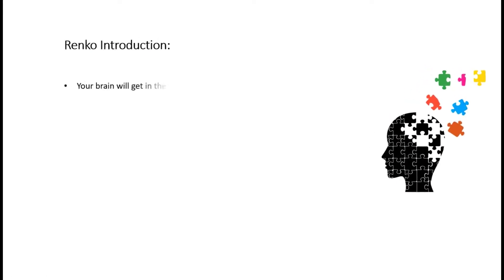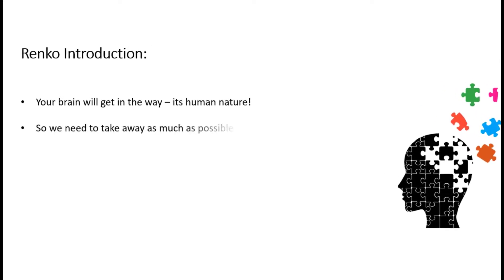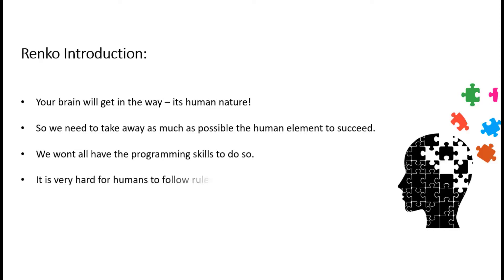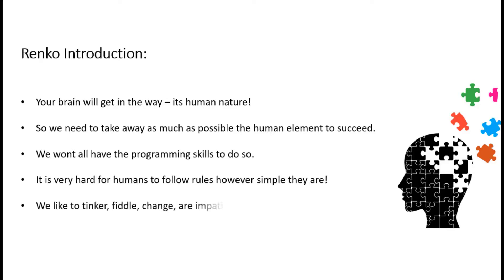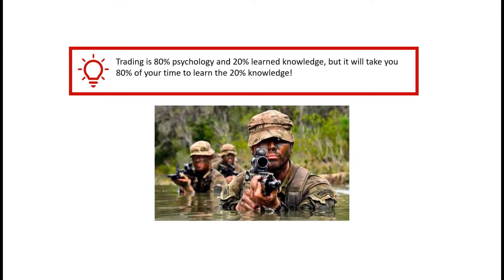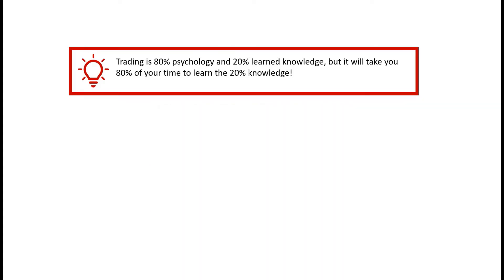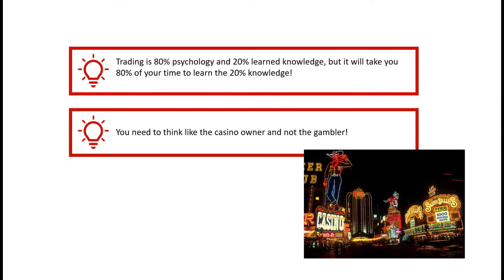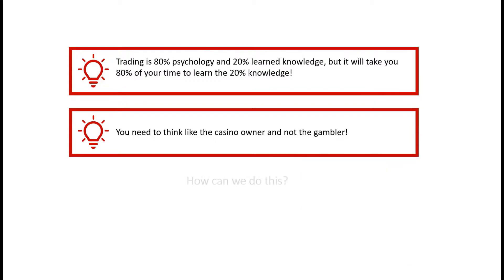The human brain is going to be your worst enemy in trading — it's human nature. We've got to try and remove that element to succeed. It's very hard for humans to follow rules; we like to tinker, fiddle, and are very impatient. But the key to trading success is often consistently doing the same thing over and over again. In the Royal Marines they say it's 20% learning, 80% psychology — same in trading. You've got to think like the casino owner, not the gambler. We're going to do this using Renko charts.